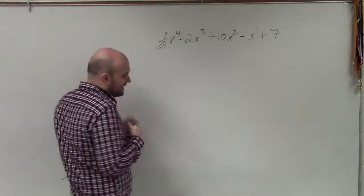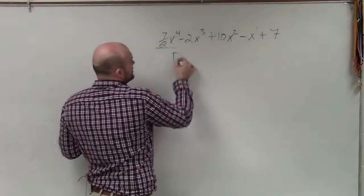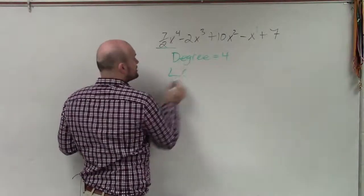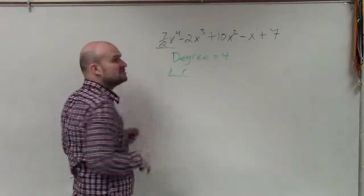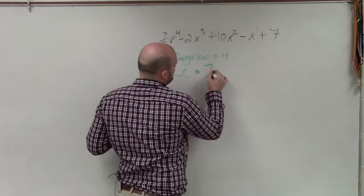When identifying the degree and the leading coefficient, the degree of the polynomial is that largest power. So I can say the degree is equal to 4, where our leading coefficient is the coefficient of the exponent, which is the largest power, which in this case is equal to 7 halves.